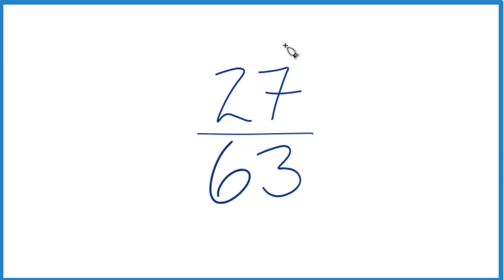If you need to simplify the fraction 27/63, here's how you do it. We're looking for another fraction that's equivalent to 27 over 63. It has the same value; it's just represented in lowest terms. So here's how we do it.